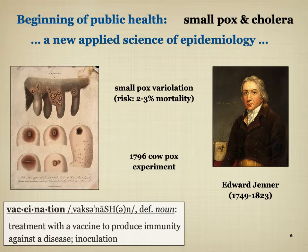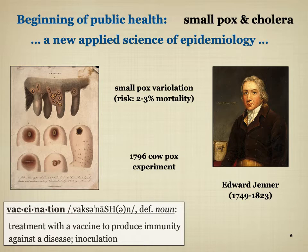Smallpox variolation is not the same as a vaccine, but it's the beginning of the idea. This had been going on in India and China for hundreds of years. In the late 18th and early 19th century, people began to realize that if done systematically, the chance of dying from variolation was much lower than dying from natural smallpox. People who had pustules applied had only a 2–3% mortality rate, compared to 20–30% mortality from natural smallpox exposure.